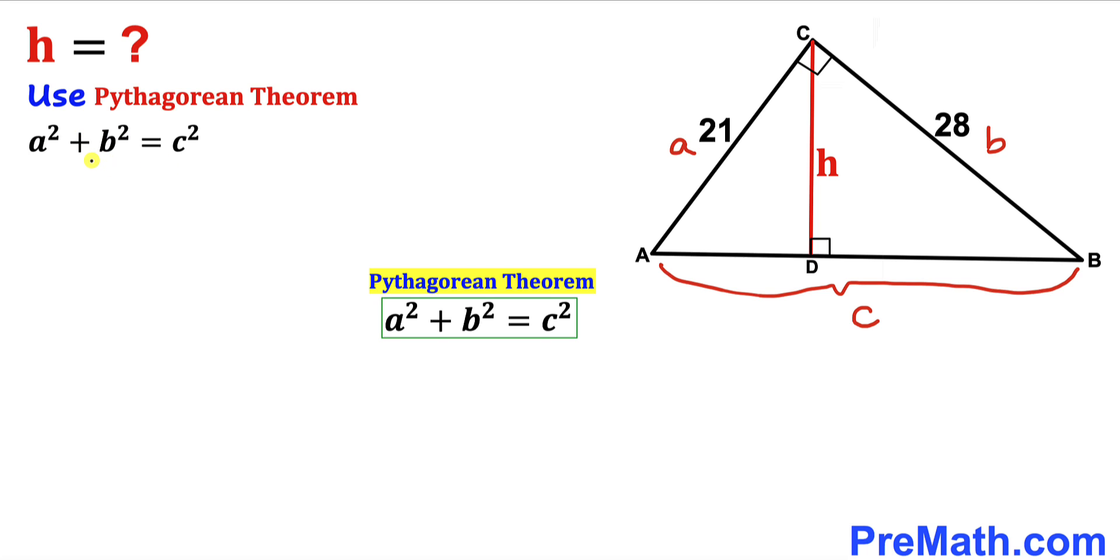So let's fill in the blanks. In our case, a is 21, so this becomes 21 squared, plus b is 28, so this becomes 28 squared, equals c squared. 21 squared is 441 plus 28 squared is 784 equals c squared. Therefore c squared is 1225.